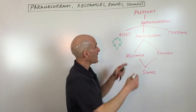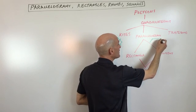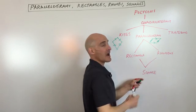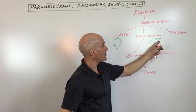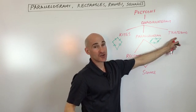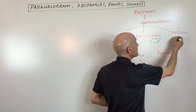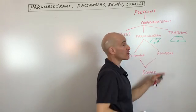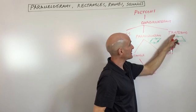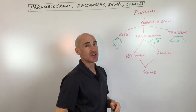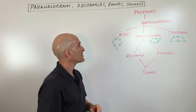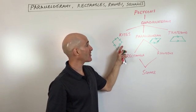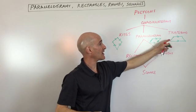A parallelogram looks something like this, and a parallelogram actually has two pairs of opposite sides parallel — so these are parallel and these are parallel — whereas a trapezoid only has one pair of opposite sides parallel. So you can see these are parallel; if they kept going they wouldn't cross, but these two sides, if they kept going, they would intersect. So think about: do they have two pairs of parallel sides, one, or none?